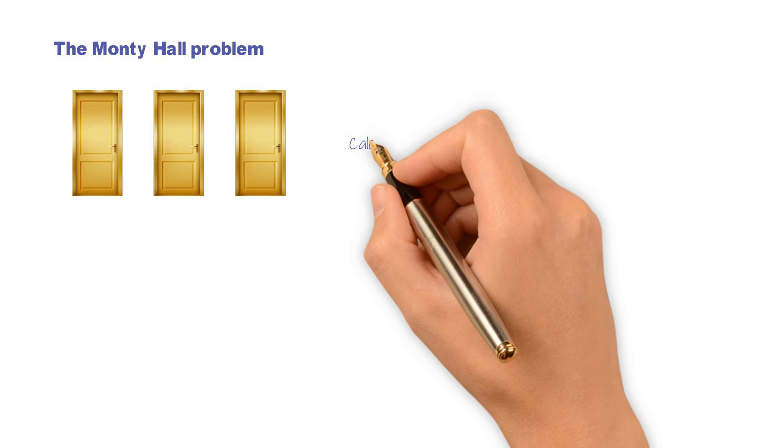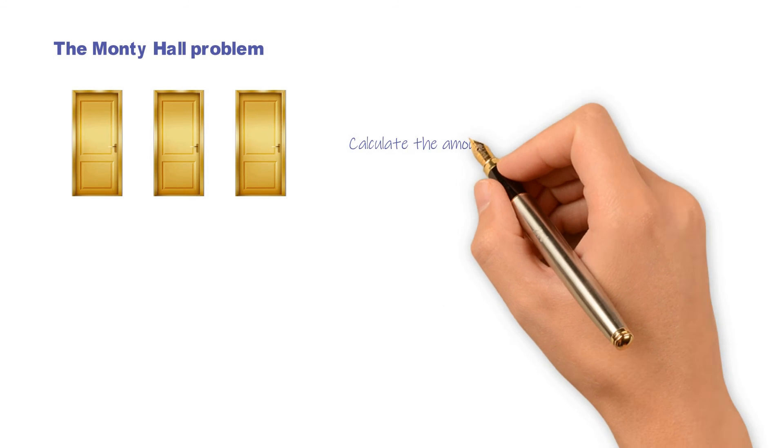There are three doors in front of you and there is a prize behind one of them. Once you select a door, the host who knows what's behind the doors will open one of the other doors that doesn't have a prize behind it. You will then have the opportunity to switch from the door you originally selected. The question today is not should you switch, but calculate the amount of information the host gave.